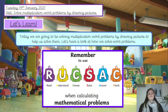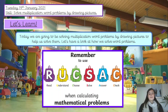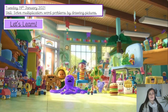Then you need to solve the word problem — think about which method is best to use. Today, we're going to be drawing pictures. That's the method we'll be using to figure out the answer. And then, of course, write the answer at the end of the word problem or underneath your working out. Finally, we always need to check our working out — make sure you've done it accurately, written the answer accurately, and that you've definitely answered what the question is asking you to do. That is Rucksack. Keep that in mind while you're doing your work today.